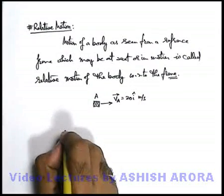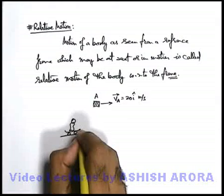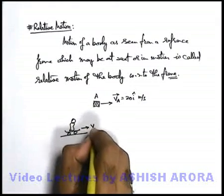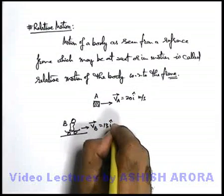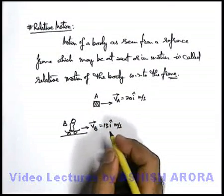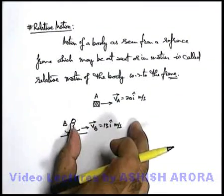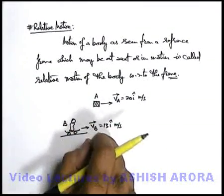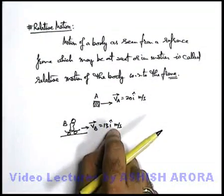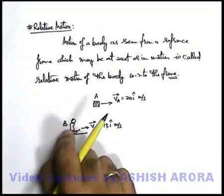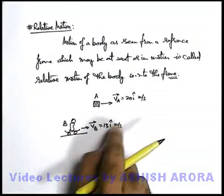In the same x-direction, say there is a boy who is standing on a skateboard and he is moving with a velocity V_B — this is boy B — and say V_B is 13 i-cap meters per second. Here we can see that A is moving faster than B, so the separation between them will increase. In 1 second, A will travel 20 meters and B will travel 13 meters, so as seen by B, A has progressed further by a distance of 7 meters.